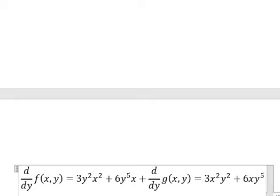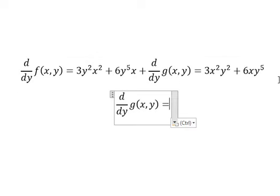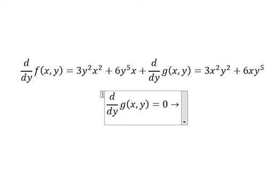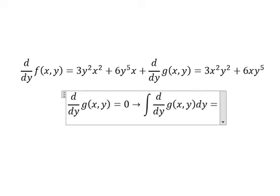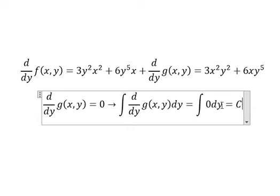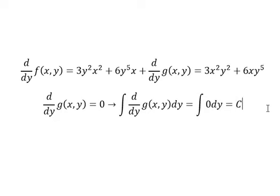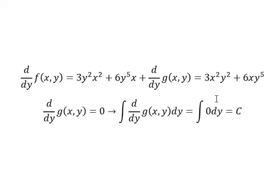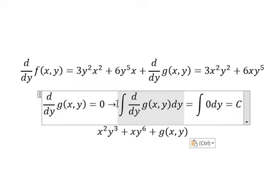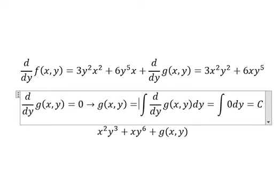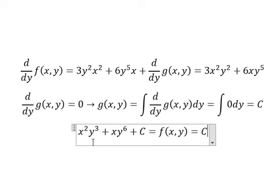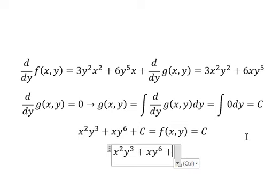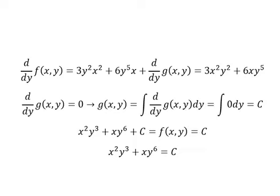We simplify both sides and get number 0. So we put the integration for both sides. The integration of number 0 gives c. Now we go back here — the integration of this one is about 3x y, which equals to c. And this one equals to g(y), so g(y) equals to c. Now we have the final answer. This is the end. Thank you for watching.